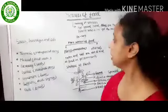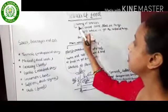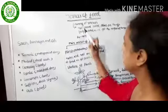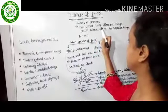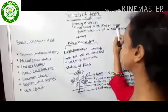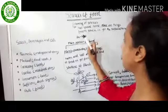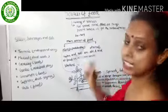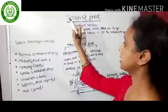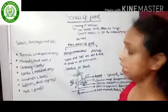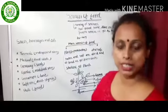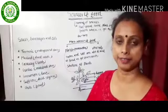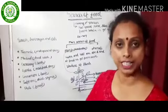First of all, we have to know the meaning of sources. The special point, place, or things from where we get the required things are called sources. For example, the sun is the source of light — we get light from the sun.